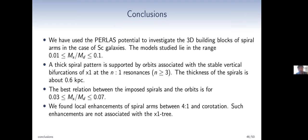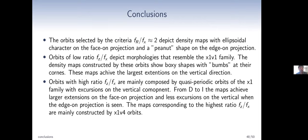Such enhancements are not associated with the X1 tree. In the case of the Milky Way, the orbits selected by this criteria yield density maps with a boxy character in the face-on projection and a peanut shape in the edge-on projection. Orbits of low F_zeta/F_x build morphologies that resemble the X1V1 family; the density maps constructed by these orbits show boxy shapes with bumps at their corners and achieve the largest extensions in the vertical direction. Orbits with very high F_zeta/F_x are mainly composed of quasi-periodic orbits of the X1 family with excursions in the vertical component. From windows D to I, the maps achieve larger extensions in the face-on projection and less excursion in the vertical direction in the edge-on view. The maps corresponding to the highest F_zeta/F_x values are mainly constructed by X1b orbits. The B through I type orbits define a kind of boxy structure where the main contributors to the internal X-structure are mainly due to D, E, and F type orbits where the peak of the distribution takes place. Orbits of J and L types contribute at almost planar regions with no contribution at internal regions.